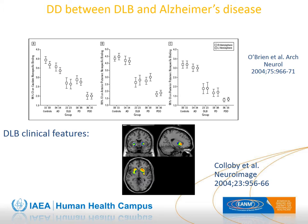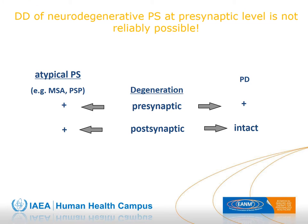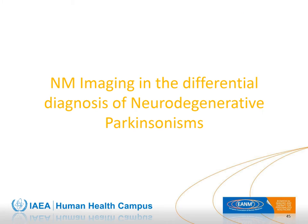DAT-SPECT can also support differential diagnosis between dementia with Lewy body and Alzheimer's disease—in DLB the scan is positive, while in AD the scan is normal. When differential diagnosis within neurodegenerative Parkinsonism is needed, this cannot be evaluated at the presynaptic level, as the presynaptic side is damaged both in atypical Parkinsonism and Parkinson's disease. Therefore other nuclear medicine imaging procedures are used for this differential diagnosis.